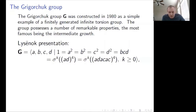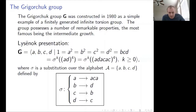There are four generators A, B, C, and D. The set of relators is infinite — this group is not finitely presented. One reason is the intermediate growth. The relators are given recursively using a substitution sigma over the alphabet A, B, C, D. A is substituted by ACA, expanding into a word of length 3, and B, C, D are cyclically permuted.